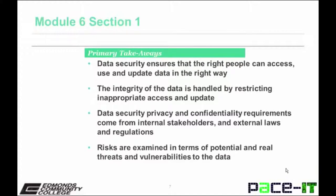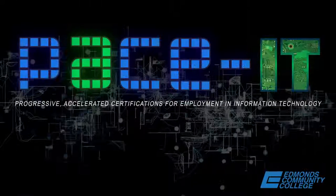Primary takeaways from this section include the following. One, that data security ensures that the right people can access, use, and update data in the right way. That the integrity of the data is handled by restricting inappropriate access and update. That data security privacy and confidentiality requirements come from external laws and regulations and internal stakeholders. And last, the risks are examined in terms of potential and real threats and vulnerabilities to the data.